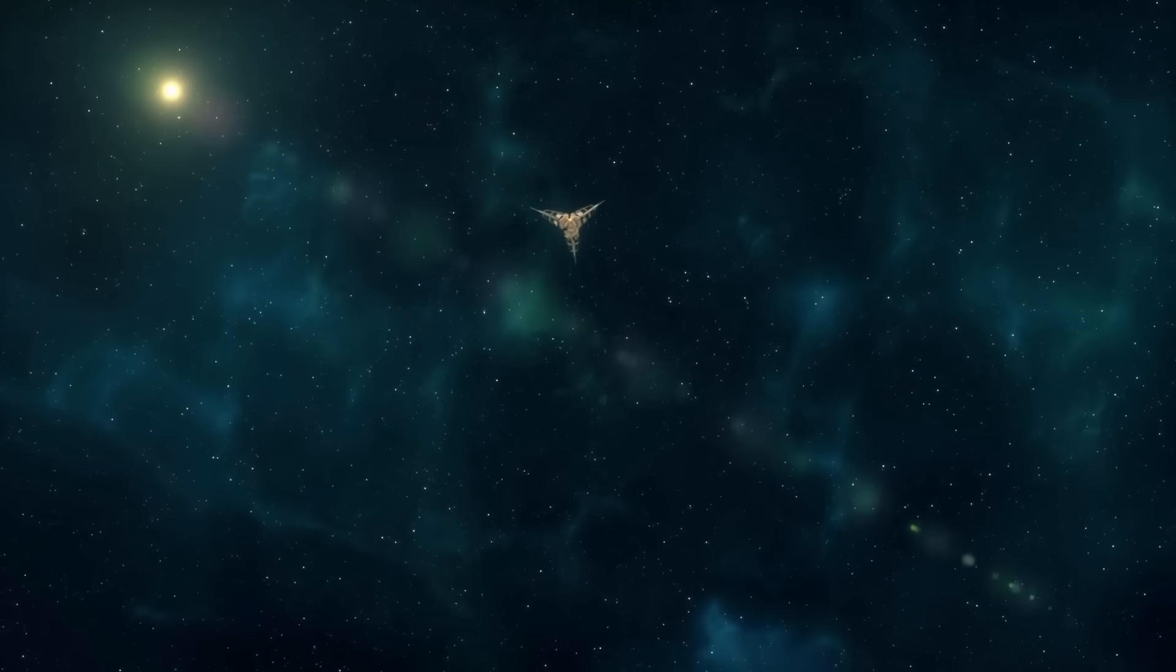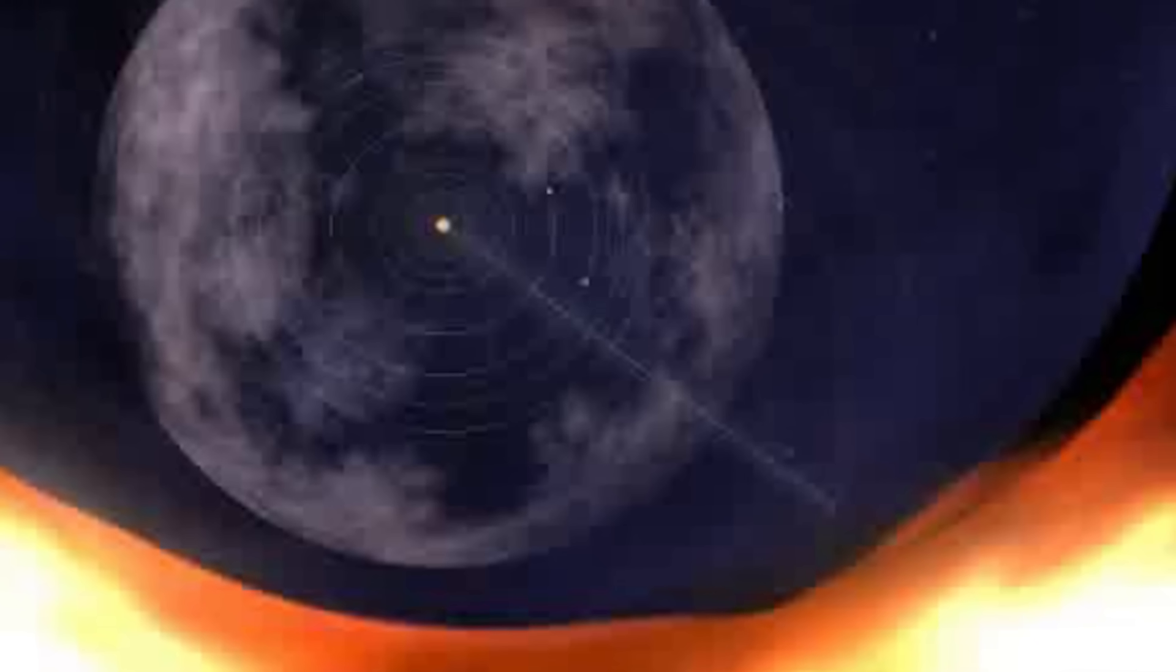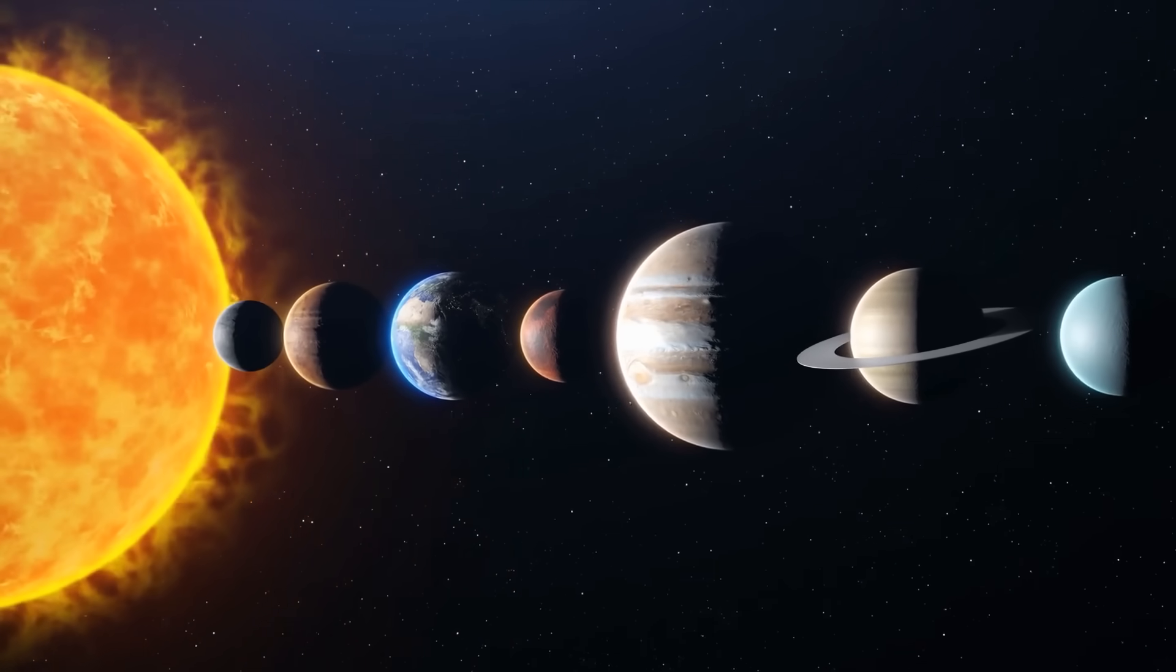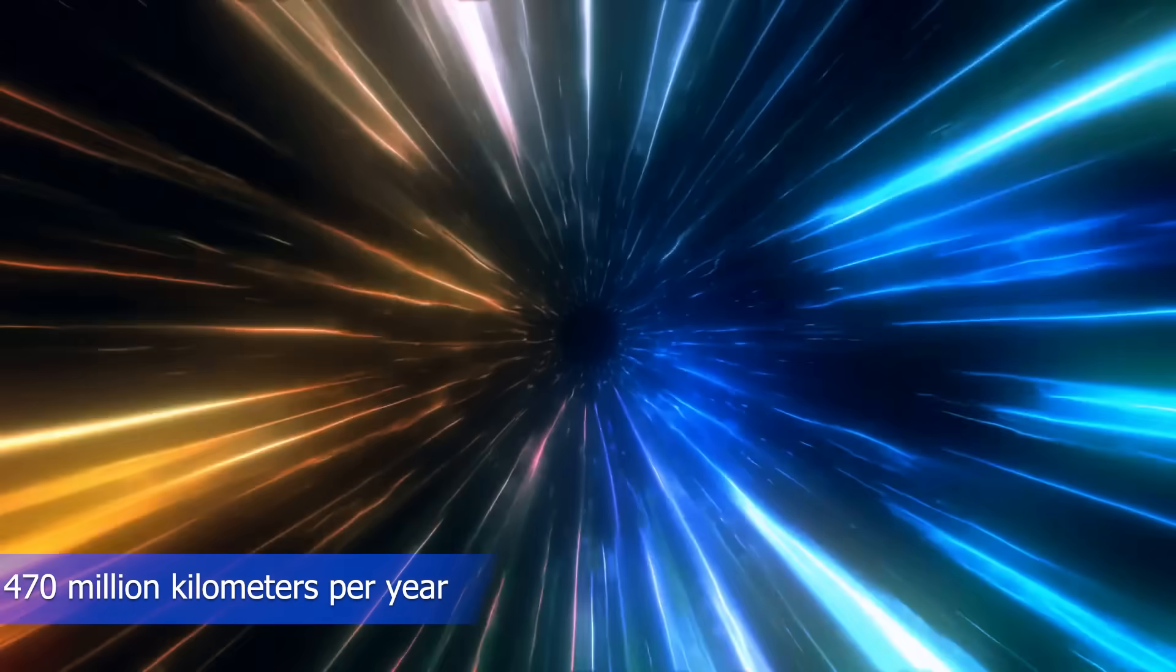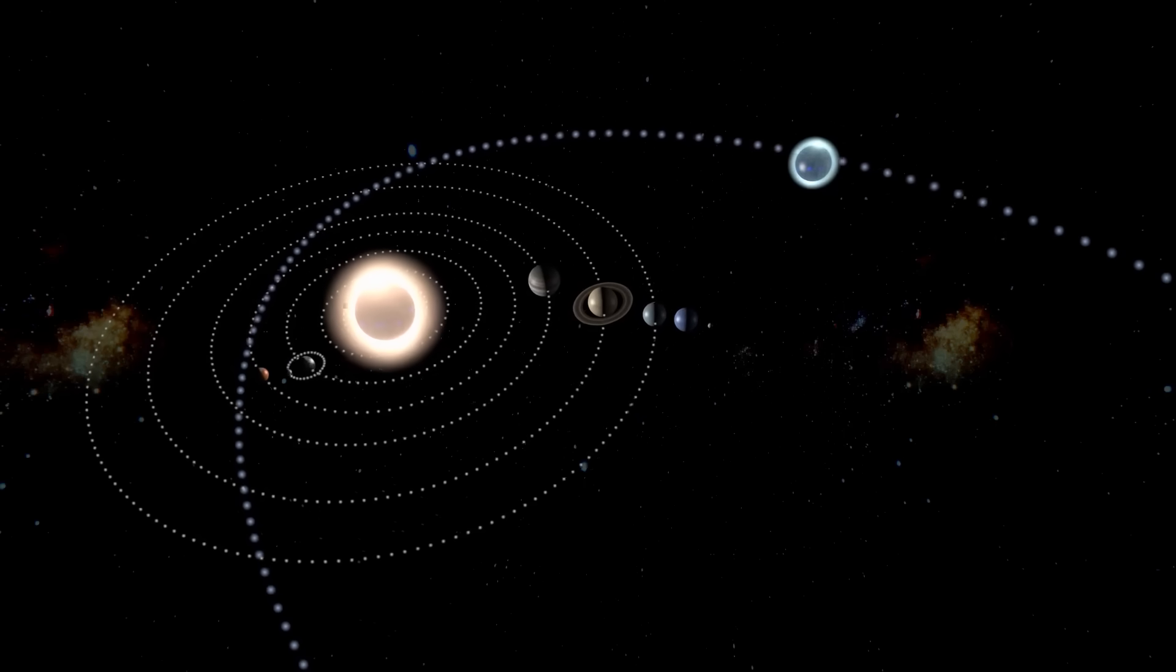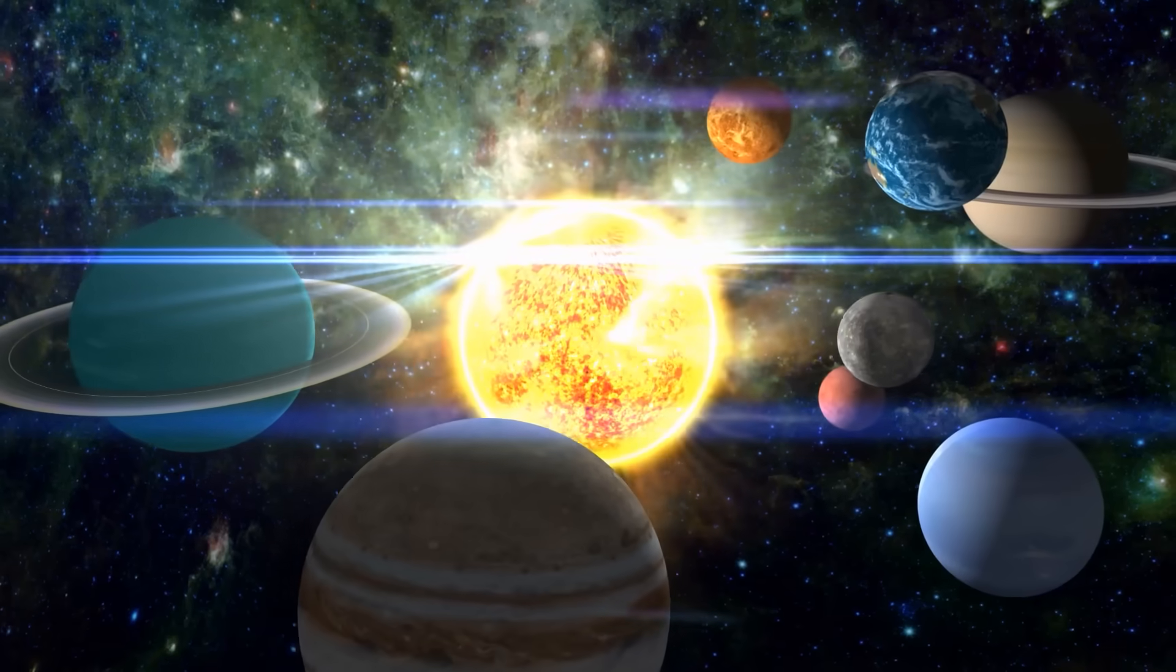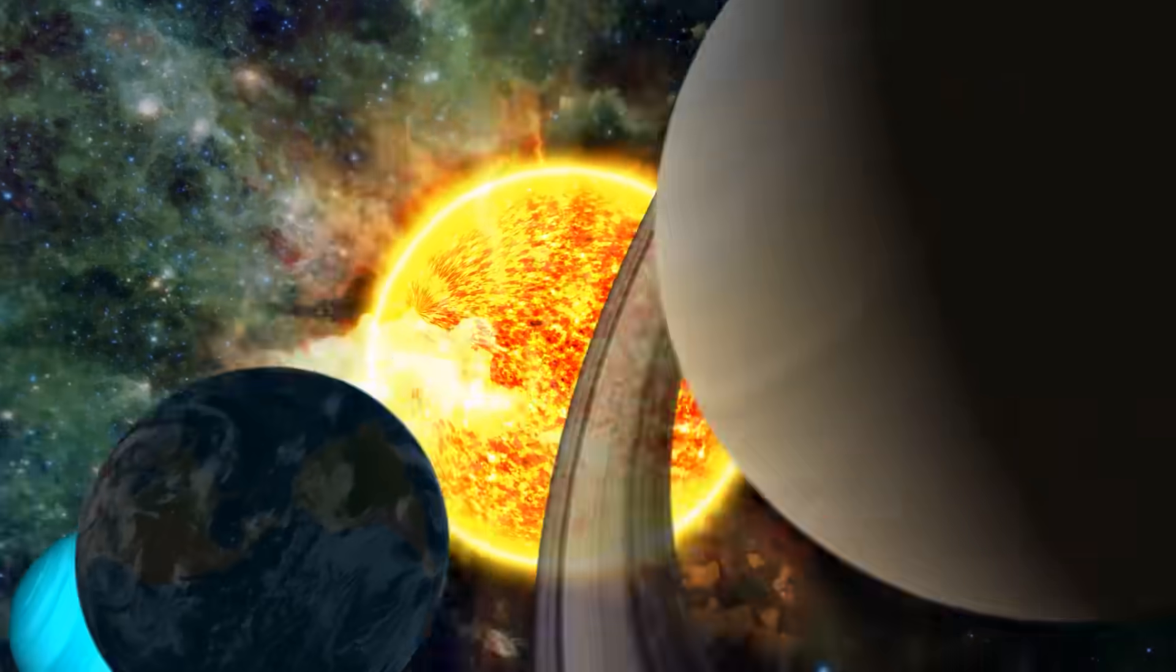In the meantime, Voyager 1 was traveling around 35 degrees above the ecliptic plane and getting closer to the heliopause at a speed of about 520 million kilometers per year. At the conclusion of its journey to Neptune, the probe passed into the outermost region of the solar system on August 25th 2012. At a speed of 470 million kilometers per year, Voyager 2 likewise reached the end of the solar system by following a path that was around 48 degrees above the ecliptic. Its speed was marginally slower than that of its identical sibling.